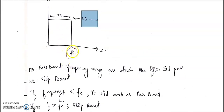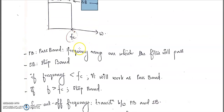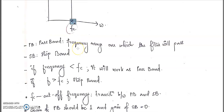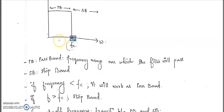If the frequency is less than fc, the filter will pass the signal; if the frequency is greater than fc, it will stop the signal. That fc is known as the cutoff frequency, representing the transition between the passband and stopband. In the ideal case, there is an abrupt change from passband to stopband — the transition width is zero. The passband gain is one and the stopband gain is zero.